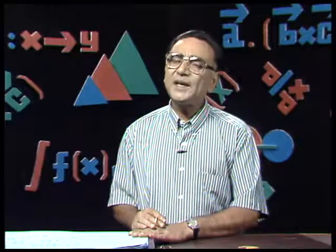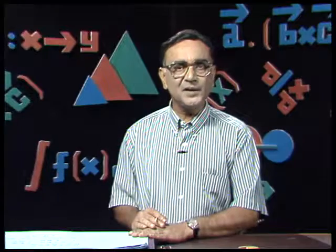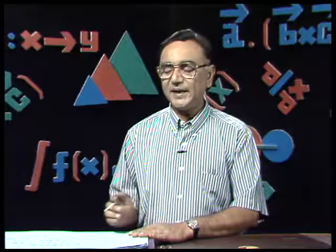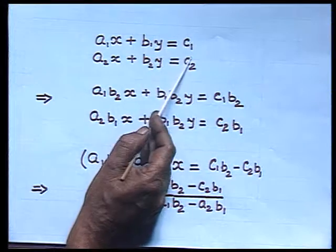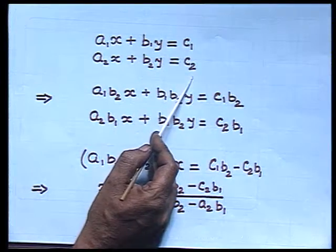So that is the way we can solve linear equations algebraically. But can we think of some other convenient way? Yes, we have another convenient way, and for that I am taking the equations in the general form: a₁x plus b₁y equals c₁ and a₂x plus b₂y equals c₂.